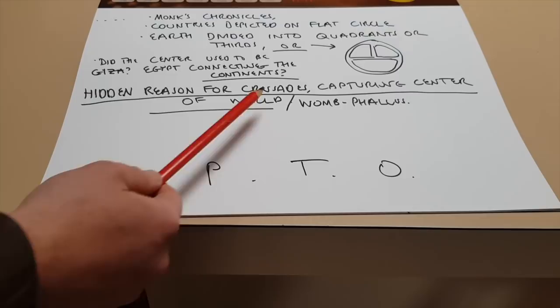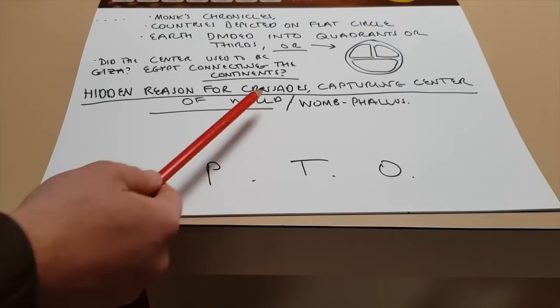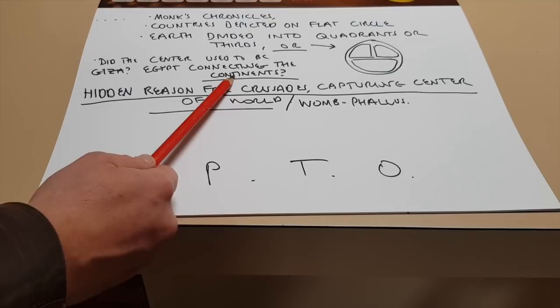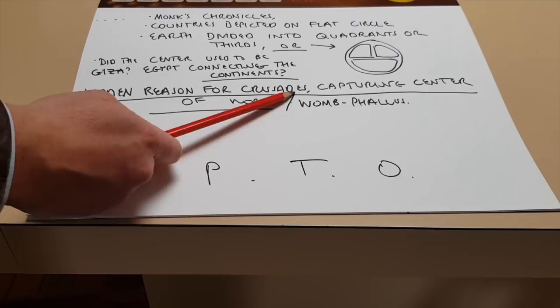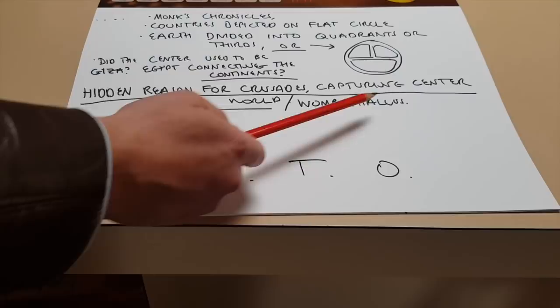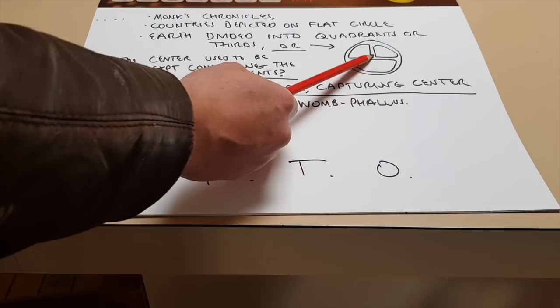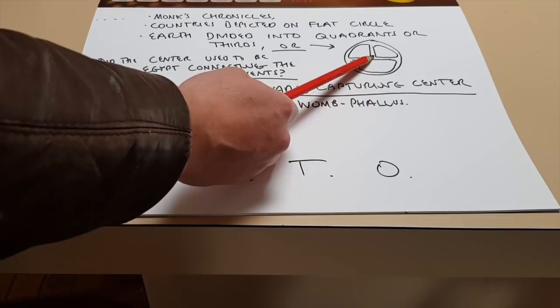You want to go to Africa. How would you do it? Well, if you're in Europe, you might stop in Egypt and go from there or to get to Asia, you'll stop in Egypt. So that is a hidden reason for the crusades capturing the center of the world or the womb phallus because medieval monks looked in their chronicles, looked at Jerusalem and said, Oh, why shouldn't we capture the center of the world? Right? So how important would that be?